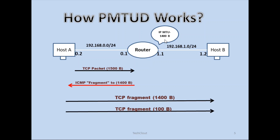The split results in one packet of 1400 bytes and another packet of 100 bytes, so that it can pass through the maximum MTU on the router, which is 1400. Then Host A can get an acknowledgement. This is how PMTUD works in the network. Even on a bigger network, it will go for a longer path discovery and analyze from where it can pass through with the minimum requirement of fragmentation.